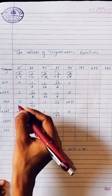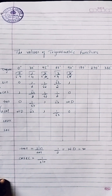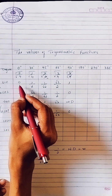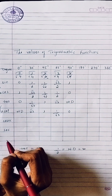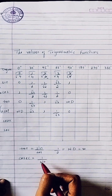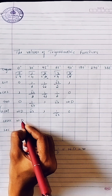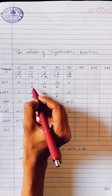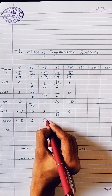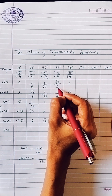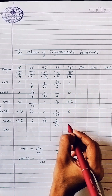What is cosec? Cosec theta is the reciprocal of sin — one divided by sin. We already have the sin values from 0 to 90 degrees. Taking reciprocals: sin 0° is 0, so 1 by 0 is not defined. Reciprocal of 1/2 is 2. Reciprocal of 1/√2 is √2. Reciprocal of √3/2 is 2/√3. Reciprocal of 1 is 1. So cosec values are: not defined, 2, √2, 2/√3, and 1.